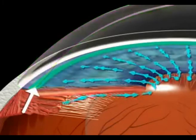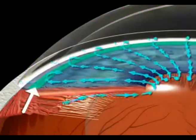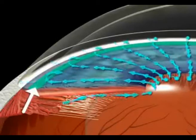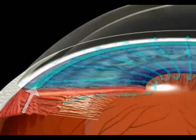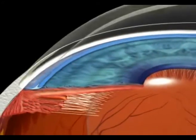When this drain becomes clogged, aqueous fluid cannot leave the eye as fast as it is produced, causing the fluid to back up. This backed-up fluid increases pressure in the eye and can cause damage to eyesight.